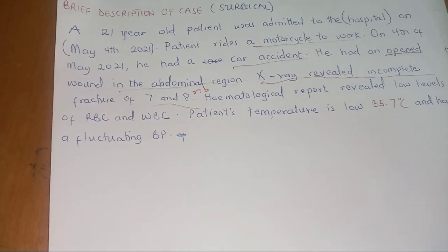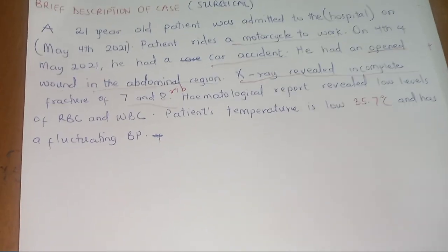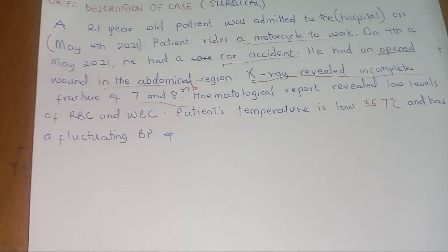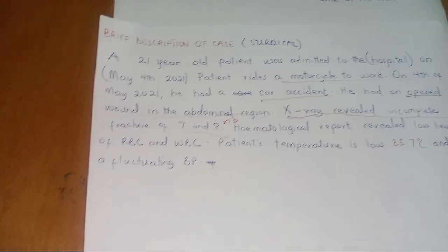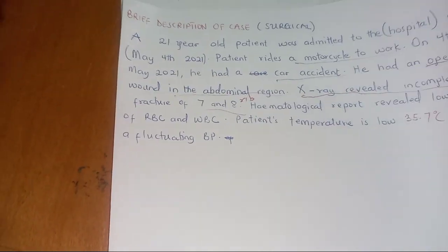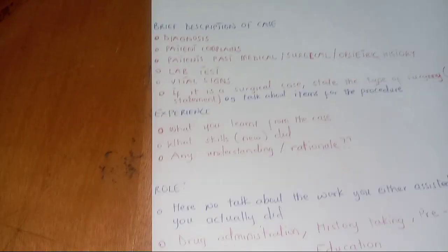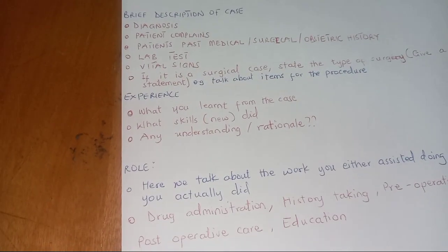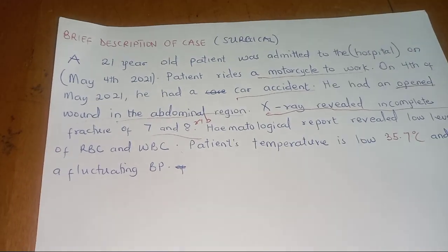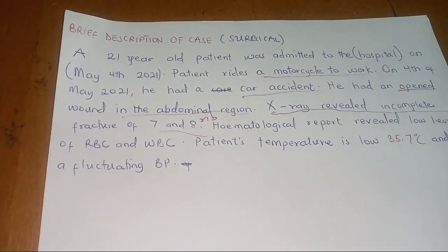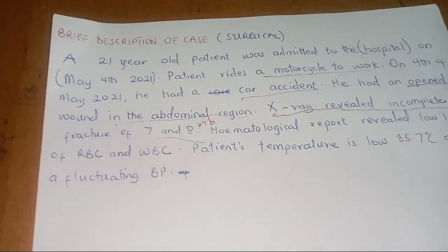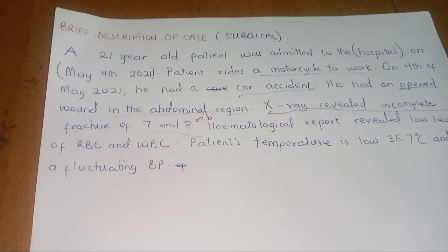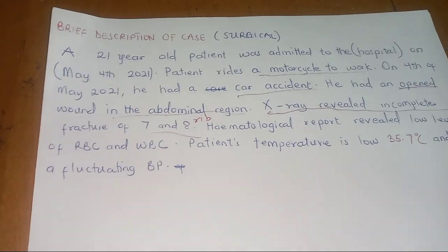The person decided to talk about the most relevant vitals — the temperature is low and the BP is fluctuating. That's a brief description of a surgical case. It's very easy — just follow these guidelines and you are good to go. I will leave my email account in the description, and if you need a sample of these clinical case reports, just message me via email and you'll receive it. Thank you.